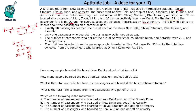Now some information is given about the number of passengers who boarded and got off the bus at certain stations. Exactly 10 passengers boarded the bus at each of the stops. Some people will get off at Shivaji Stadium, then at Dholakunha, then at Aero City, and finally at IGI.